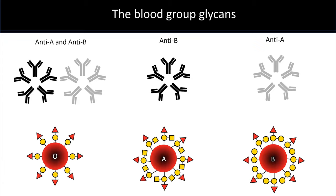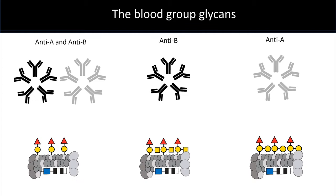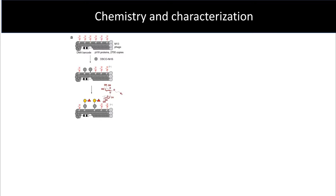In my project, I am mimicking the presentation of di- and trisaccharide components of the ABO glycans displayed on red blood cells on M13 phage. The outer coat of phage protein serves as a scaffold and allows us to attach multiple antigens. There's a unique DNA barcode inside the phage, which allows for genetic encoding and profiling of antigen-antibody interaction. We use strain-promoted azide-alkyne cycloaddition method developed by the Bertozzi group to attach the glycans on the phage.